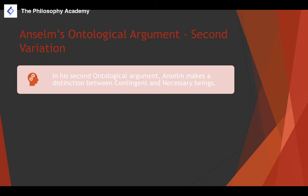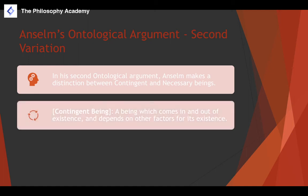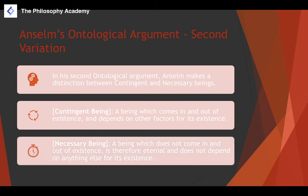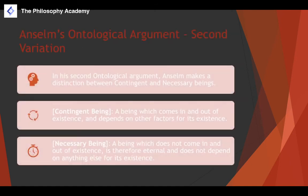In his second ontological argument, Anselm makes a distinction between contingent beings and necessary beings. A contingent being comes in and out of existence and depends on other factors for its existence. A necessary being does not come in and out of existence — it is therefore eternal and does not depend on anything else for its existence.